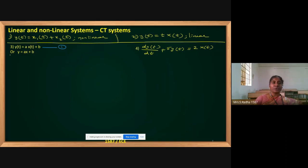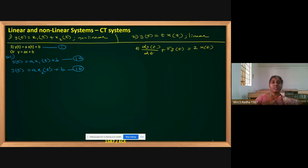Coming to the solution, the first step is to put x as x1, giving y of t equal to a into x1 of t plus b — name this equation 1a. Second time, put x as x2, giving a into x2 of t plus b — name this equation 1b. These are two different cases, so I am giving names for the outputs as y1 and y2.